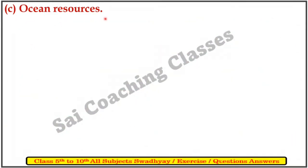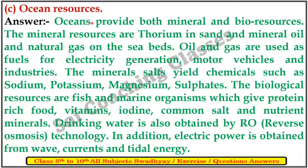C. Ocean Resources. Answer: Ocean resources include oil and natural gas from dusty fields. Oil and gas are used as fuel for electricity generation, motor vehicles and industry. The mineral salts yield chemicals such as sodium, potassium, magnesium and sulfates. The biological resources are fish and marine organisms which give protein-rich food, vitamins, iodine, common salt and nutrient minerals.